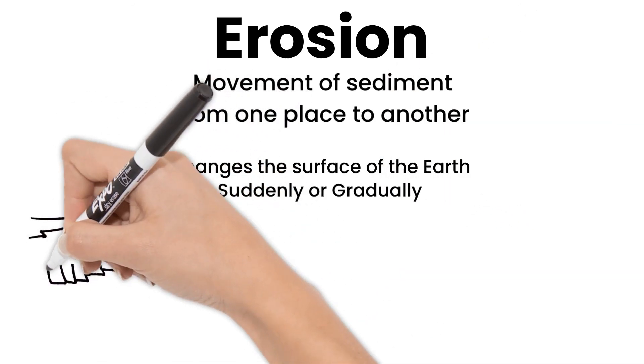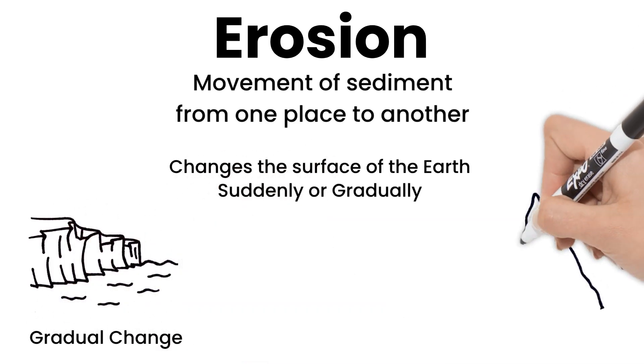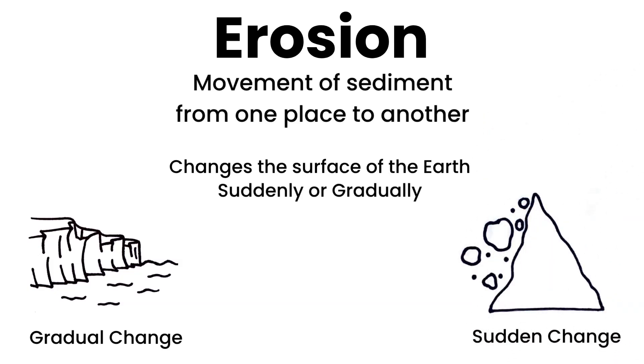receding ocean cliffs are gradually eroding away, versus a rock slide that causes sudden change. Rocks and sediment were on a mountaintop and now they fill the valley.